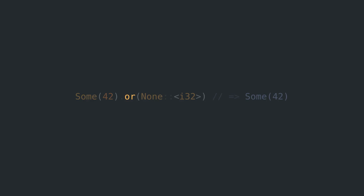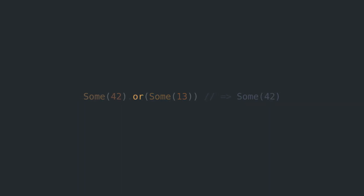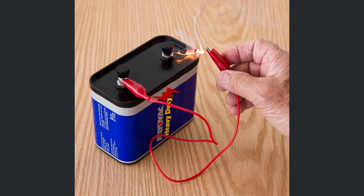You think the Rust developers couldn't possibly have messed this one up? Oh boy, are you wrong. Some AND Some yields the second Some, while Some OR Some yields the first Some value. And before any of you start a discussion about short-circuiting in the comments, I don't want to hear it. This is just terrible design.